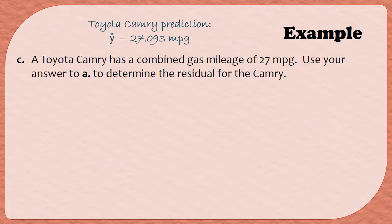In this example, we are told that the actual gas mileage is 27 miles per gallon. Here we have enough information to determine the residual.